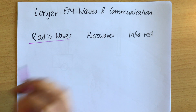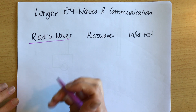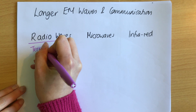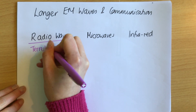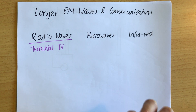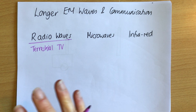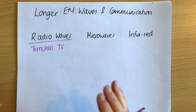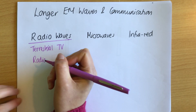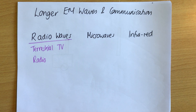Radio waves: in terms of communication, the main uses are terrestrial TV — that's your normal TV from the aerial outside your house, not sky, not cable, but what you'd get without those — and also general radio signals, like the radio in your car. You're using radio waves, hence the name, to pick up those signals.